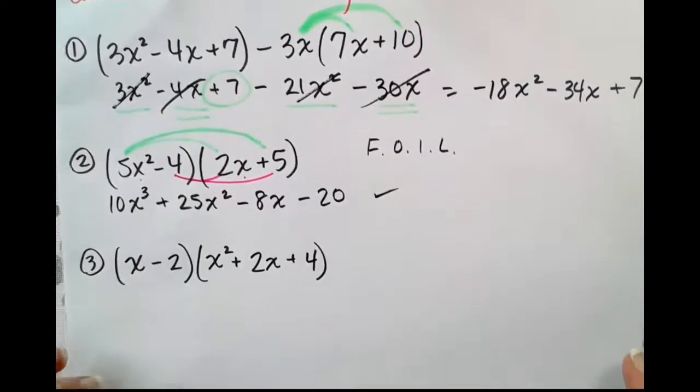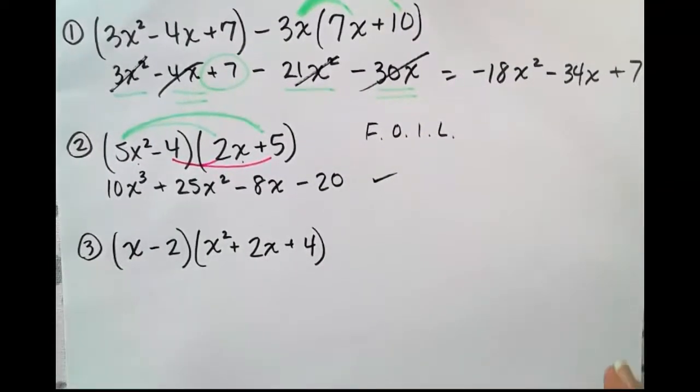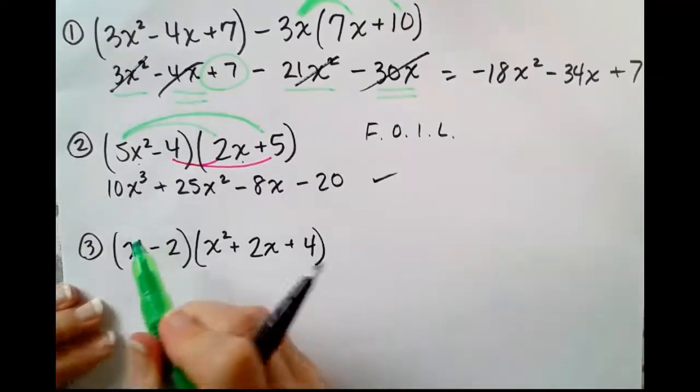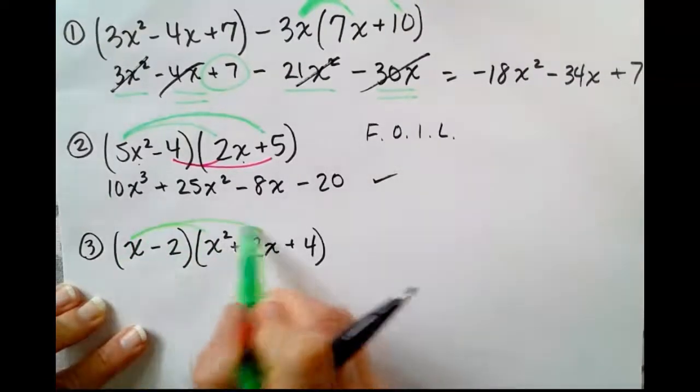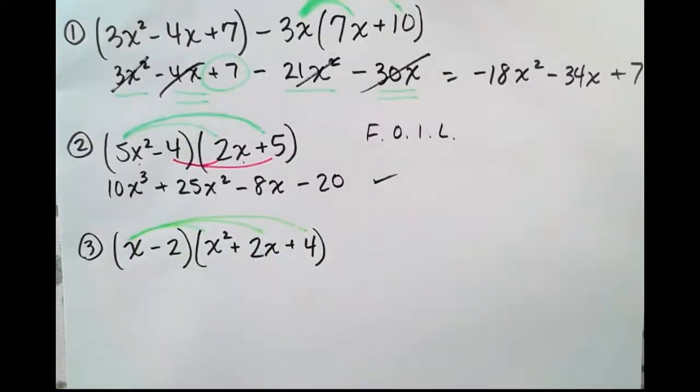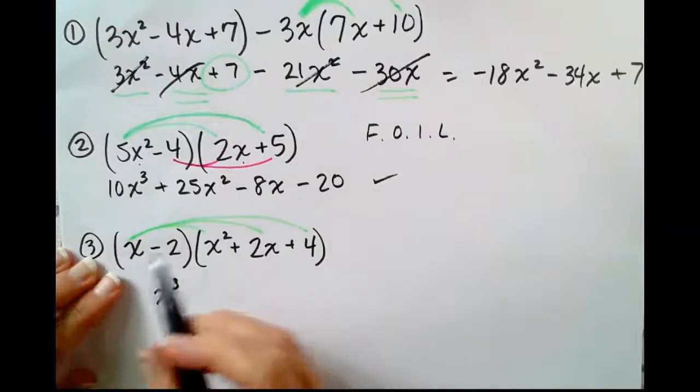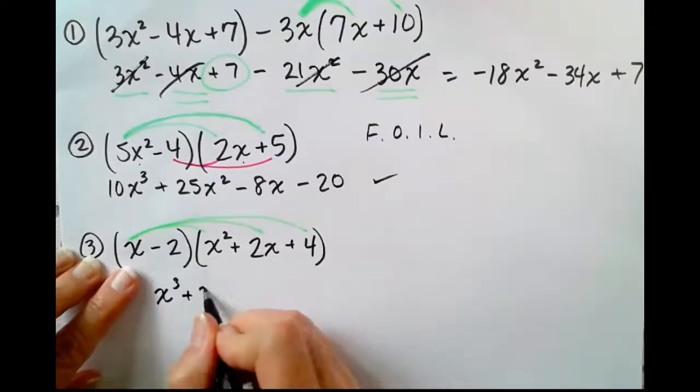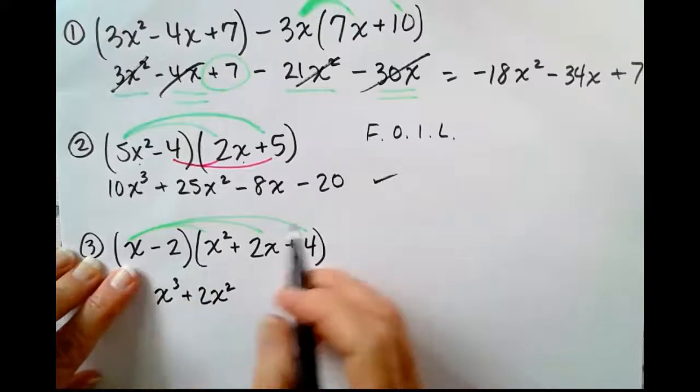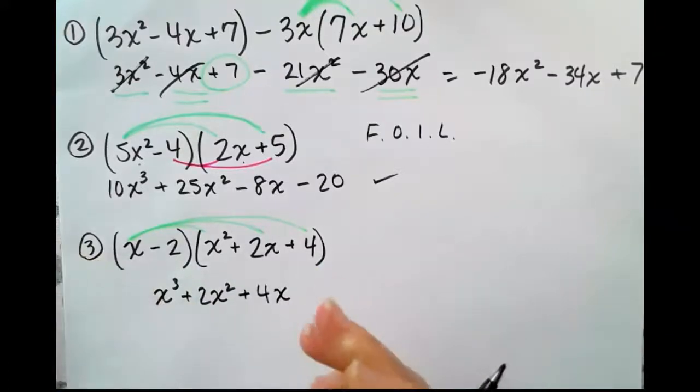Number 3 is a binomial times a trinomial. We're still going to do a double distribution. First, the x is going to go all the way through. x times x squared is x to the third. x times 2x plus 2x squared. x times 4 plus 4x.